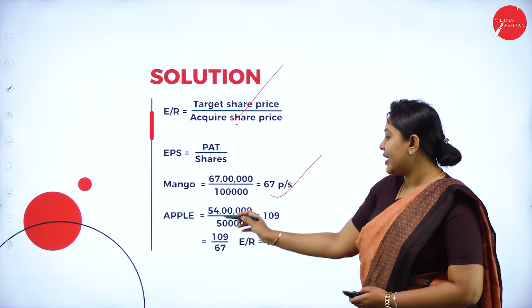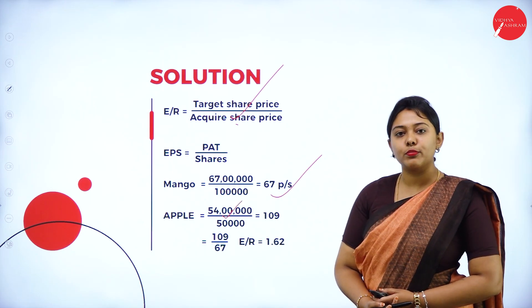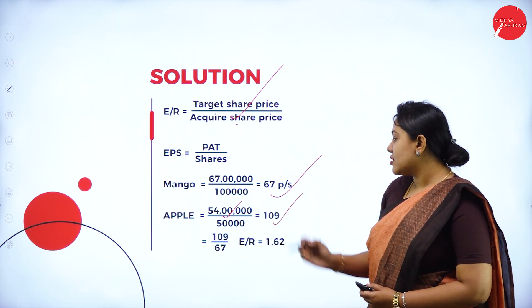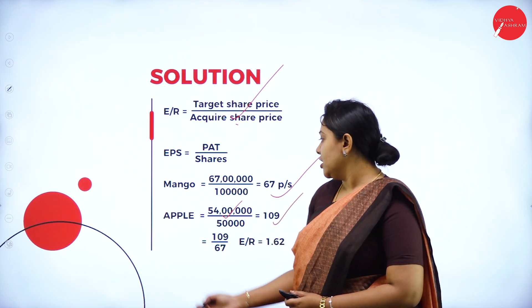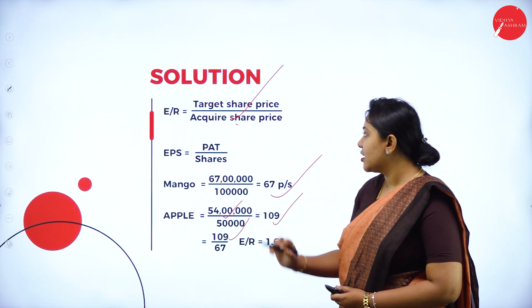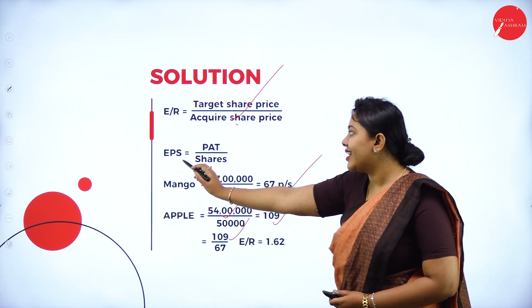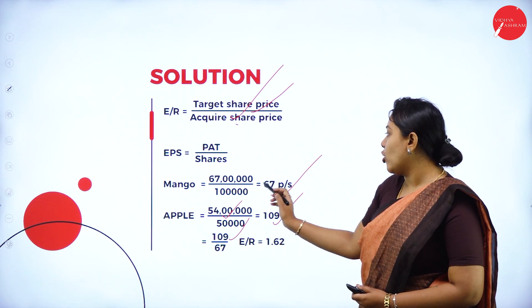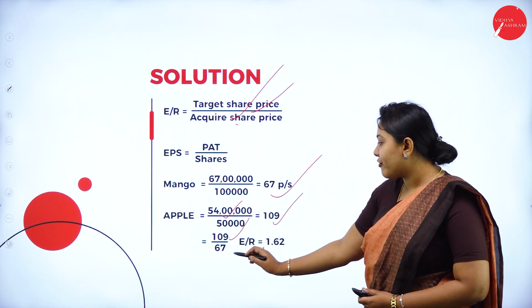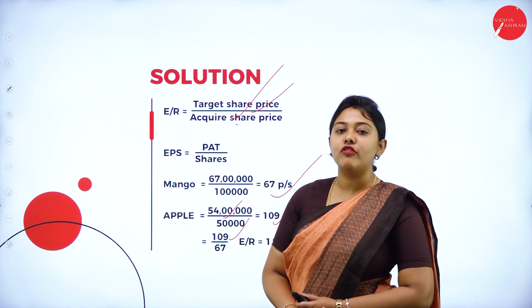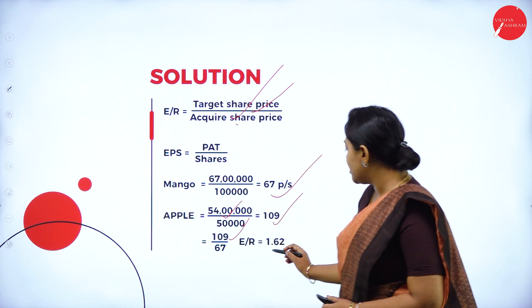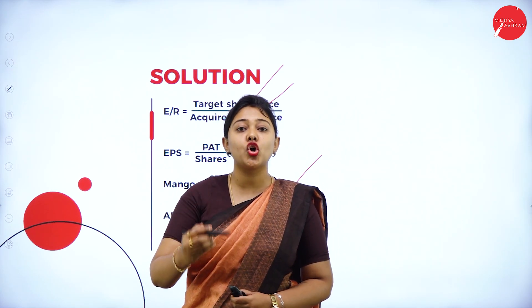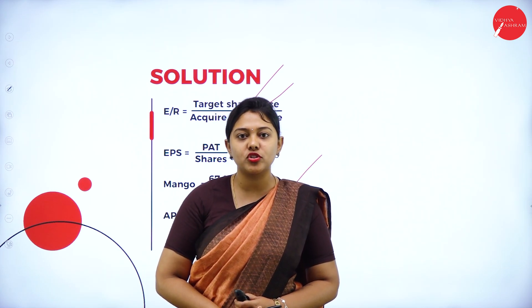Similarly, for Apple Limited: 54 lakh profit after tax divided by 50,000 shares gives 109 per share. Target company EPS is 109 and acquirer (Mango) EPS is 67. Substituting these values into the exchange ratio formula gives an exchange ratio of 1.62. This is how you calculate the exchange ratio based on EPS valuation.